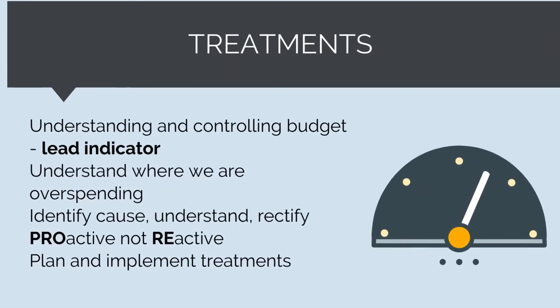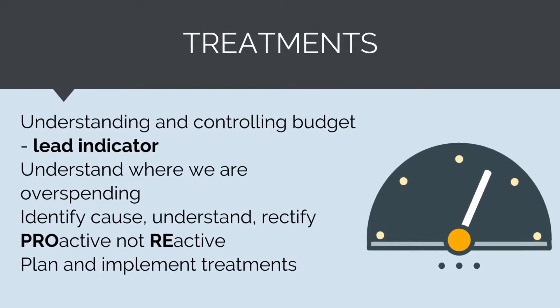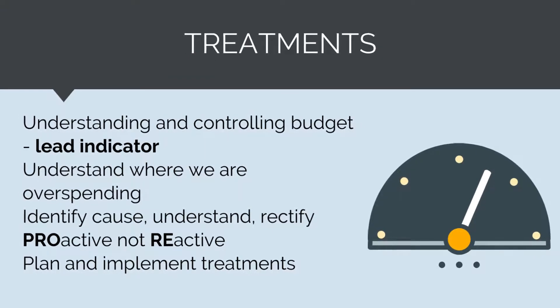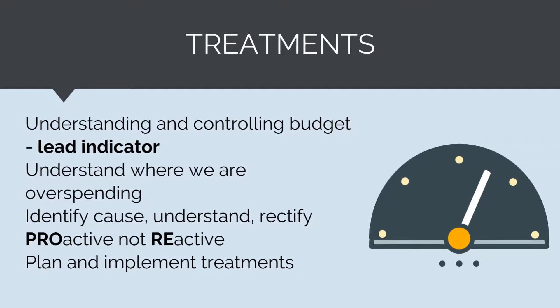Understanding, monitoring and controlling our budget gives us a lead indicator as to what our performance is going to be. We can understand where and by how much we are overspending, which allows us to identify a cause, understand it and then rectify it. We can be proactive and deal with things before they occur rather than being reactive and dealing with things after they occur — this is a form of superpower. Where we are overspending the budget, we can plan and implement treatments to correct costs and hopefully bring the works under budget.